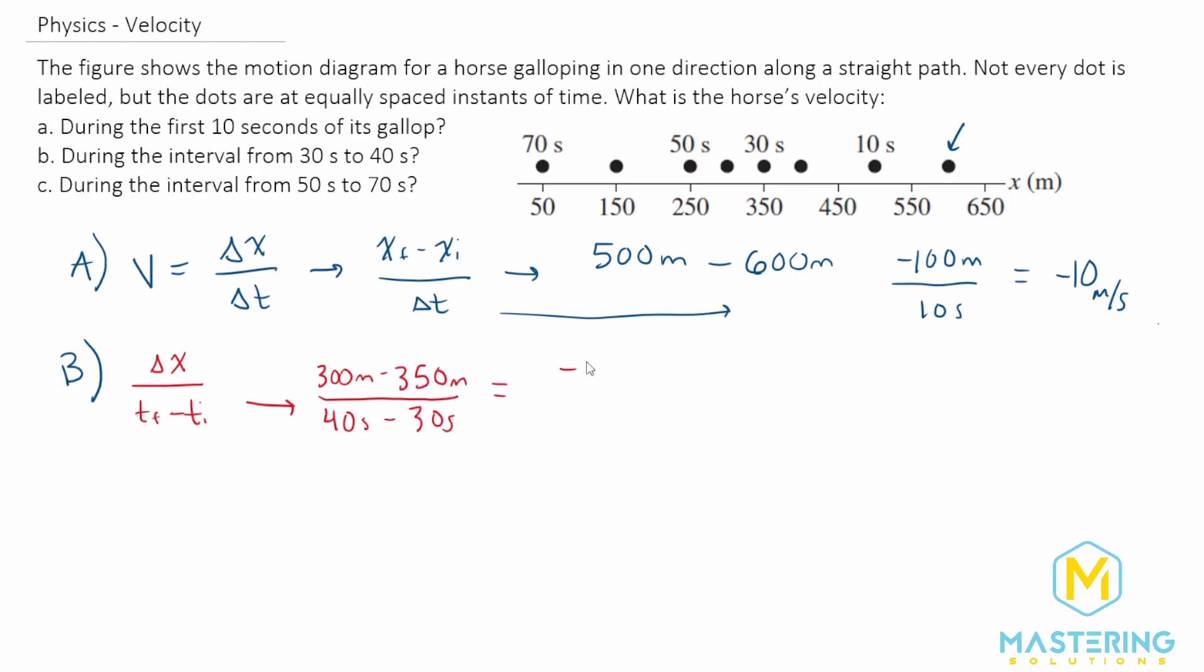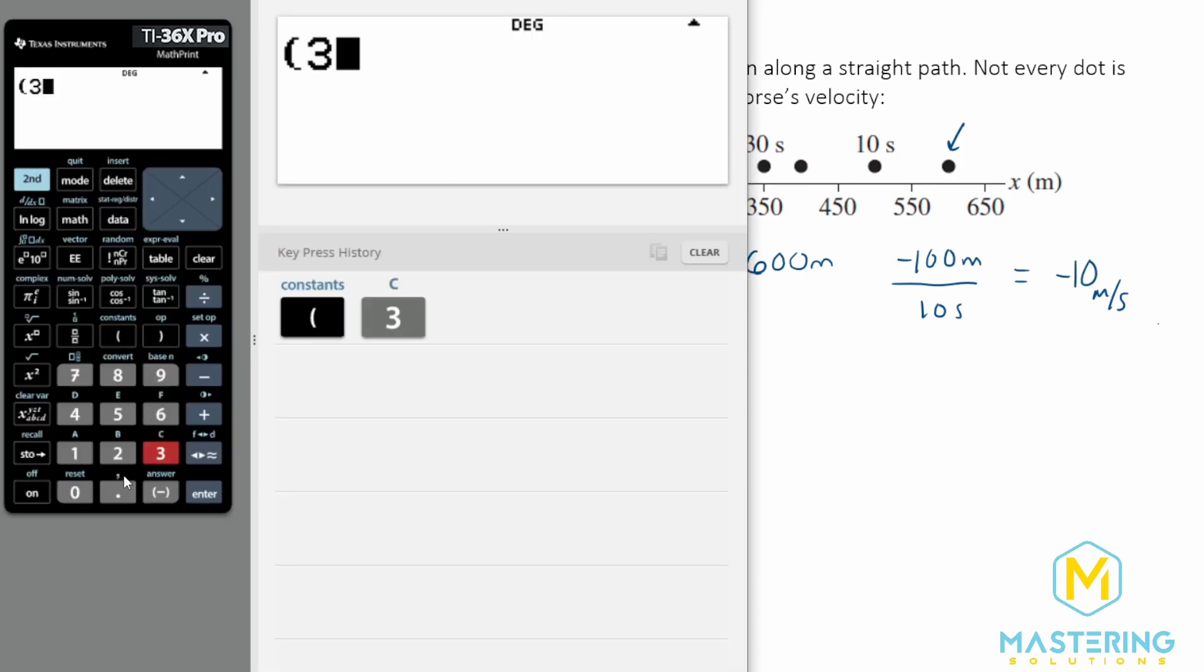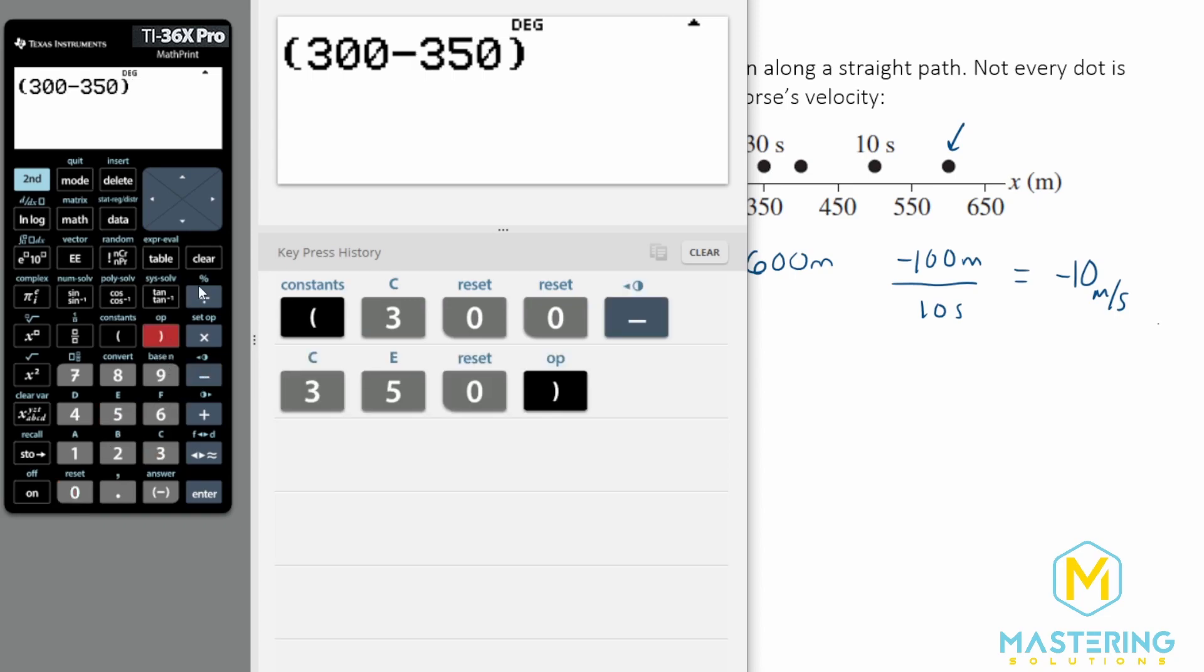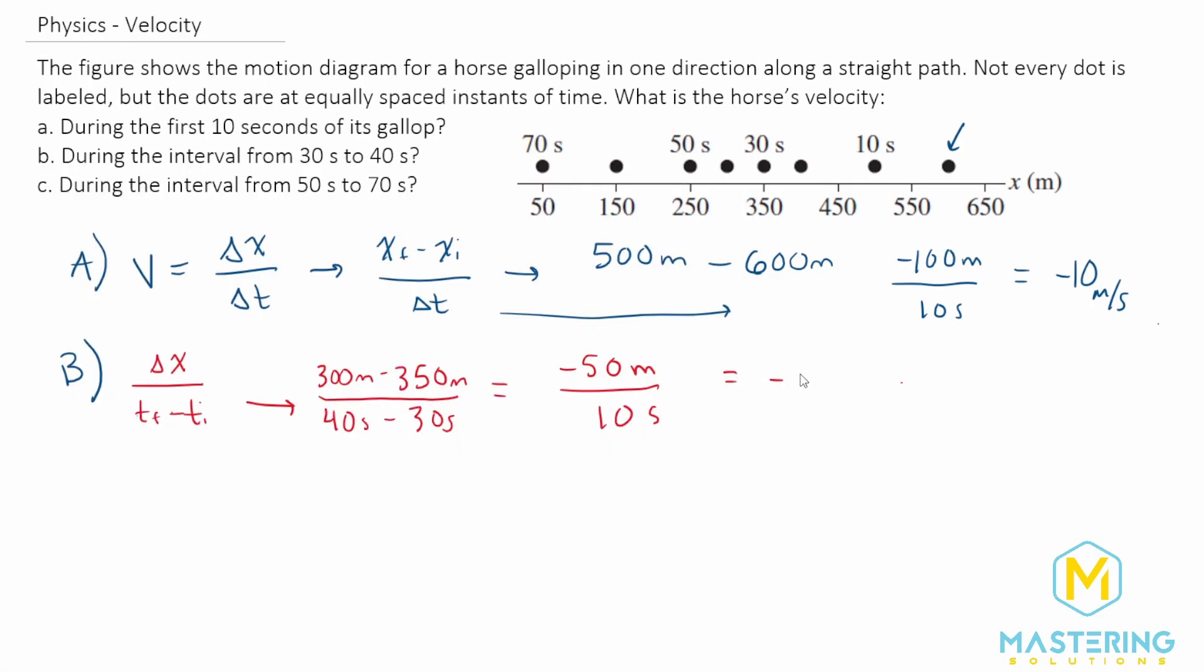That gives us negative 50 meters divided by 10 seconds. So if we do 300 minus 350 divided by 10 seconds, it gives us negative 5. So the velocity for part B is negative 5 meters per second.